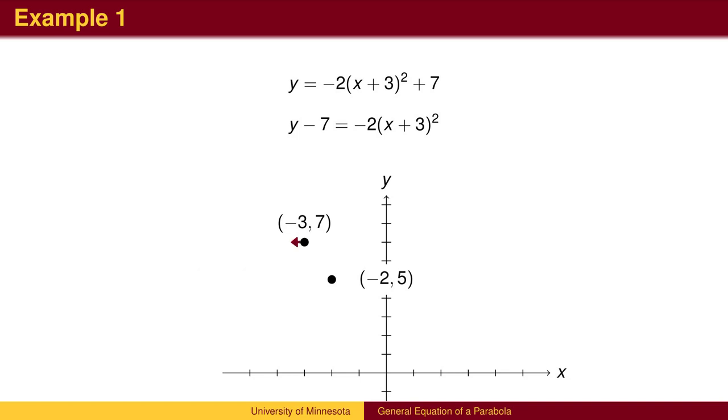Similarly, 1 left and 2 down puts us at (2,5). We can also find points that went left or right 2 and down twice the usual 4, or down 8, to (1,-1) and (5,-1). We can then draw the parabola.